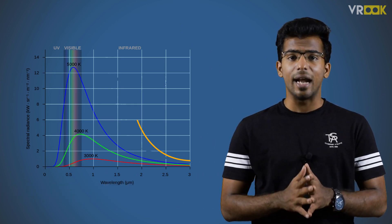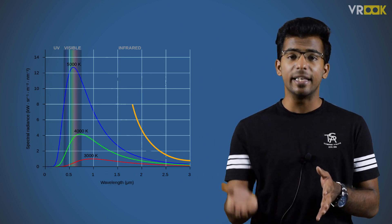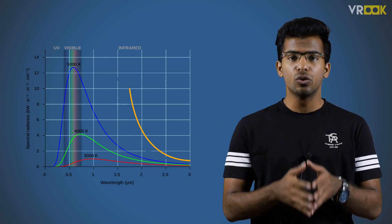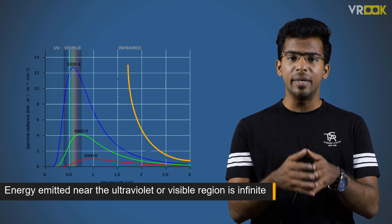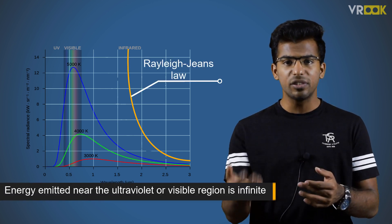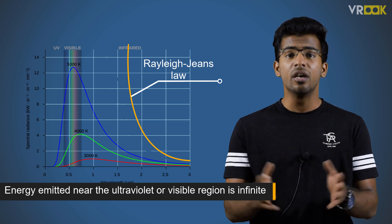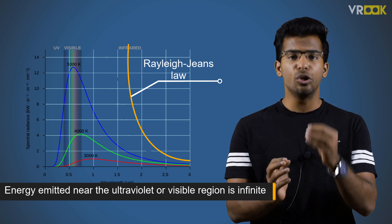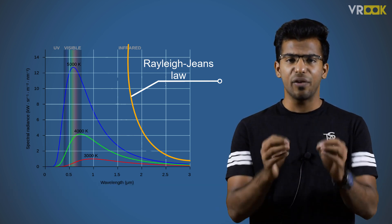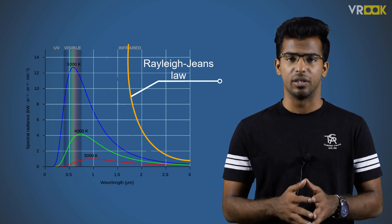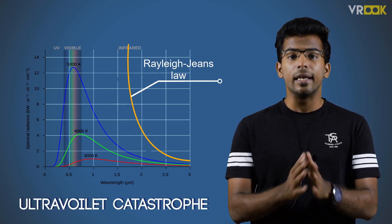Rayleigh-Jean's law stated that intensity decreases exponentially with increasing wavelength. Conversely, the energy emitted near the ultraviolet or visible region of the electromagnetic spectrum would be infinite, which contradicts the law of conservation of energy. This has been termed the failure of classical physics, and is also known as the ultraviolet catastrophe.